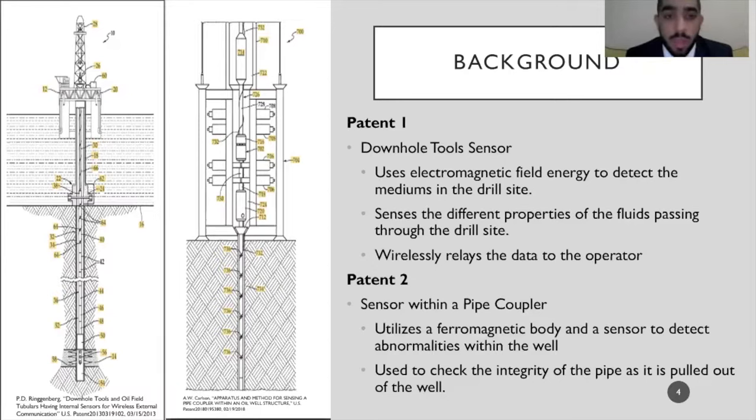The patent on the right, the second patent, is a sensor within a pipe coupler. This sensor utilizes a magnetic body and sensor to detect abnormality within the well. For us, abnormality will be sand, oil, and wireline. The sensor is also used to check the integrity of the pipe as it pulls out of the well. This patent is different because it's for detecting abnormality and ours is for detecting wireline.